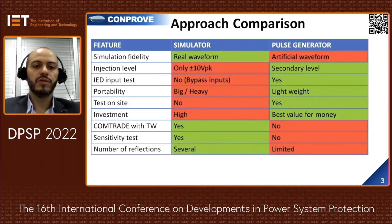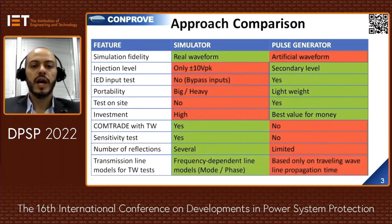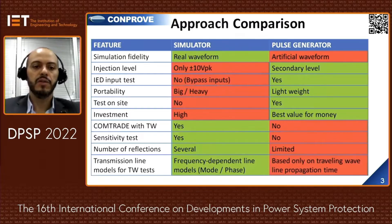About reflections, the simulator solution can reproduce several reflections, while the pulse generator uses a capacitor discharge that limits the number of reflections. Concerning line models, the simulator uses a frequency-dependent model; however, the pulse generator is based only on propagation time and does not have a complex and accurate model. You can see the pros in green and the cons in red.